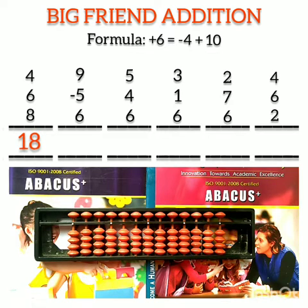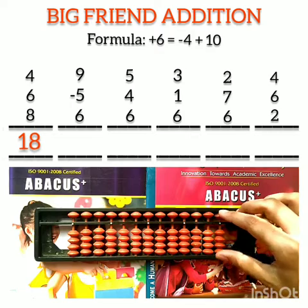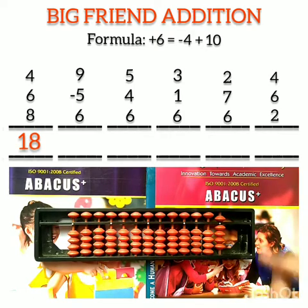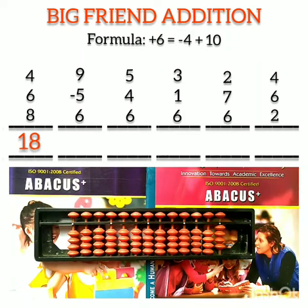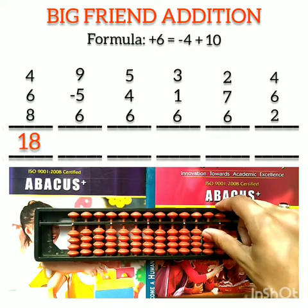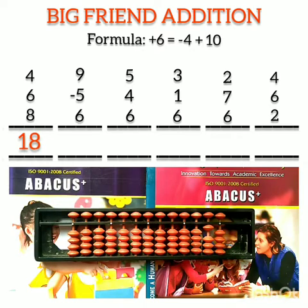Question number 2: 9 minus 5 plus 6. The first number is 9. We have to subtract 5 from it. Now we have to add 6, but again 6 is not possible on one slot. So we do the same thing: minus 4 plus 10. Our answer is 10.